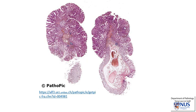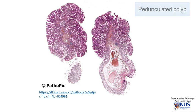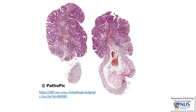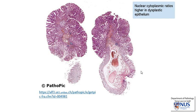Here is an example of a very low-power microscopic view of a pedunculated polyp, taken from PathoPic, which is a wonderful resource that allows us to show histology and gross pathology pictures. Here is the stalk of the polyp, and this part here is the cauterized base of the stalk. This is the benign or normal colonic mucosa, and this is the submucosa, which contains some loose connective tissue as well as some congested blood vessels. The head of the adenomatous polyp is in this region, and the mucosa is a lot darker than in the normal colon because the nuclear cytoplasmic ratios, or NC ratios, of the dysplastic epithelial cells are much higher than the normal colonic epithelial cells.